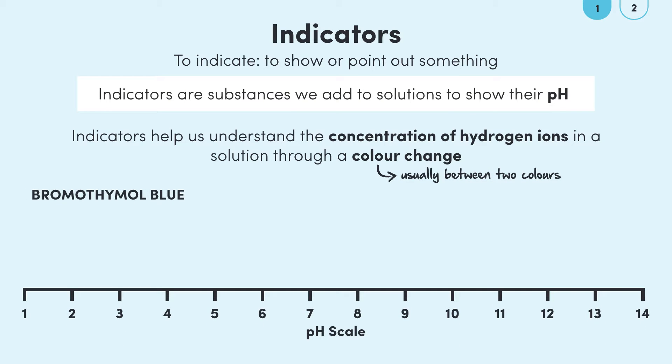For example the indicator of bromothymol blue can be yellow or blue depending on the pH of the solution it's added to. Below a pH of 6 bromothymol blue turns yellow but above a pH of 7.6 bromothymol blue is blue. So depending on this color we see we can get information about the pH of a solution.